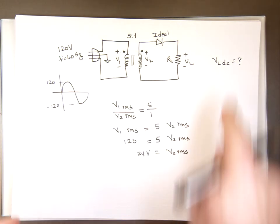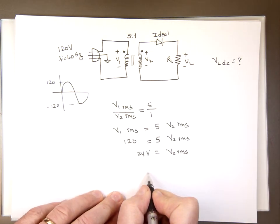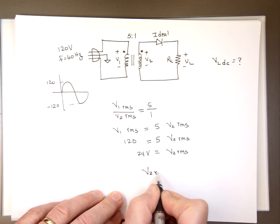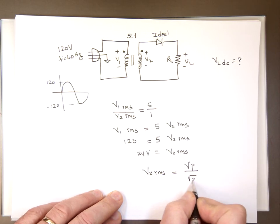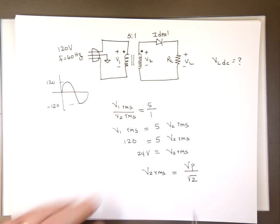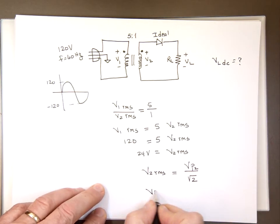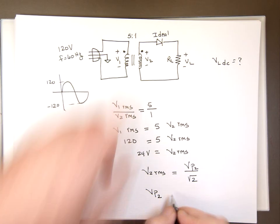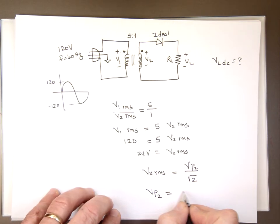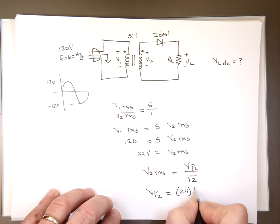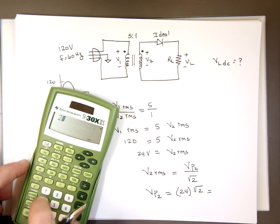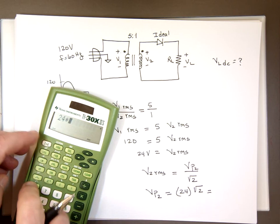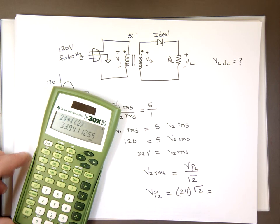Well, I can't find VL DC until I know the peak value. So what is V2 peak? If you remember from previous video, V2 RMS for a sine wave is V peak divided by the square root of two. So if I do the math, the peak voltage across the secondary, or V2 here, is going to equal to 24 times the square root of two. That's roughly 34 volts.